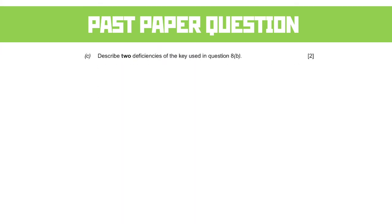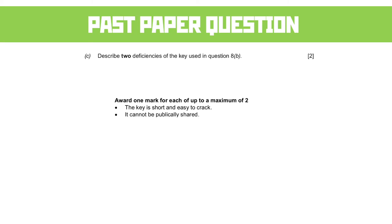Part C: describe two deficiencies of the key. We get two marks for any of these options. The first is the key is short — it's an 8-bit key and we could crack that in a few minutes with a reasonably powerful computer. Second, it can't be publicly shared. The moment you share that key for encryption, the person can just work backwards to decrypt it.